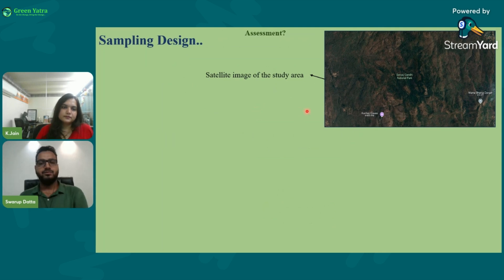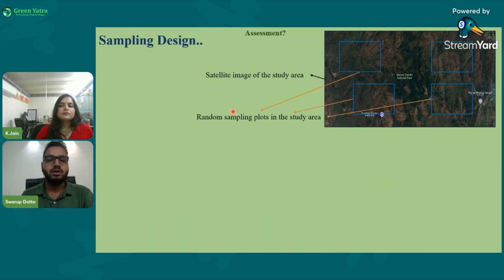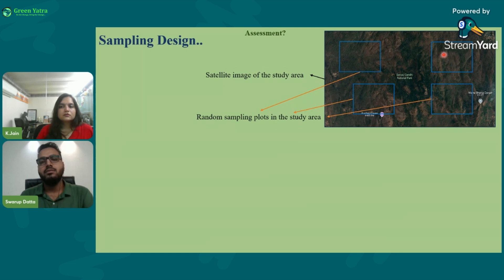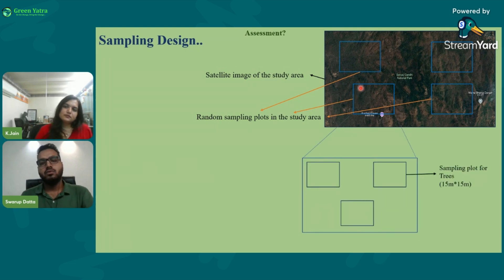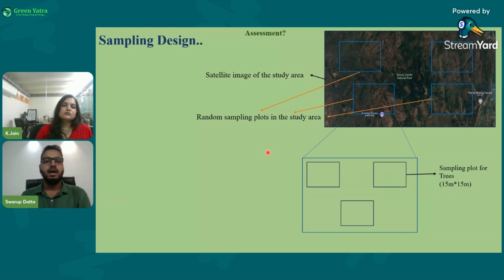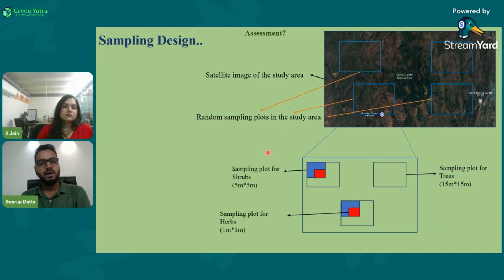For sampling design, consider Sanjay Gandhi National Park as the study area. We apply random plots — these spots must be selected randomly, otherwise our data will be biased. Zooming into one plot: for trees we use a 15m x 15m quadrat, counting the number of species and measuring the girth of trees to assess ecosystem density. For shrubs we use 5m x 5m, and for herbs we use 1m x 1m.